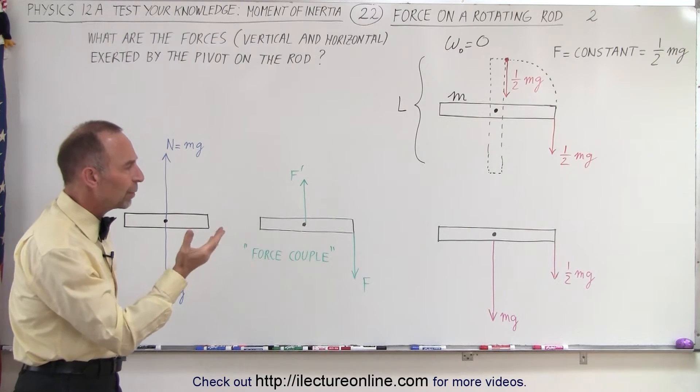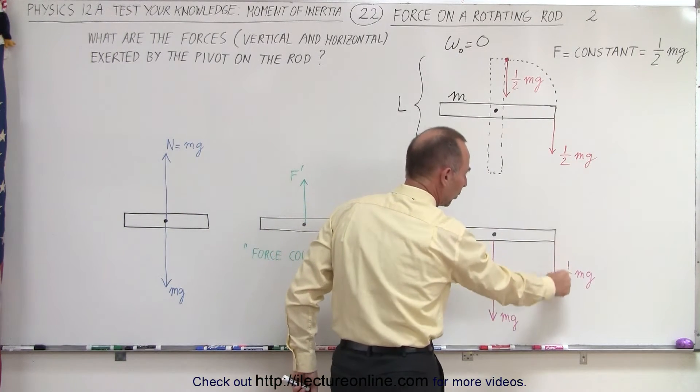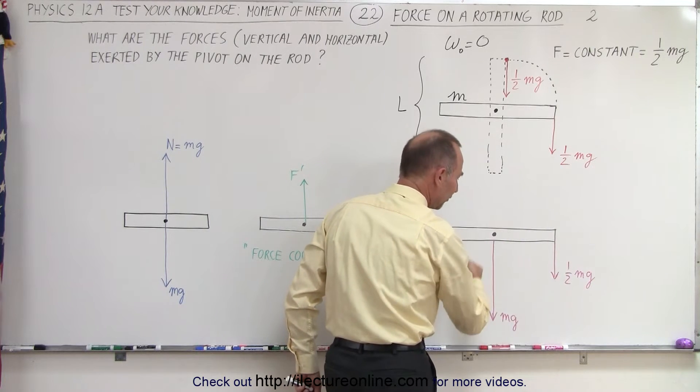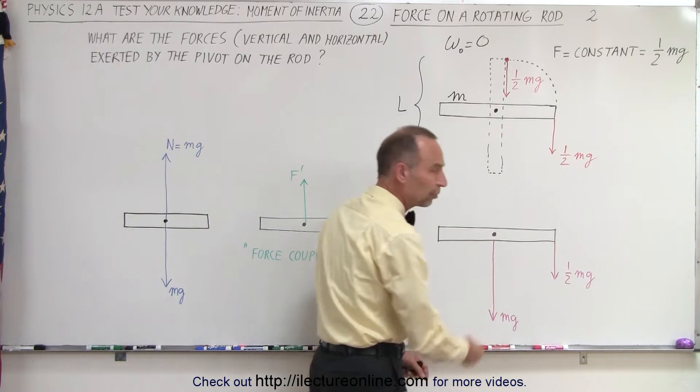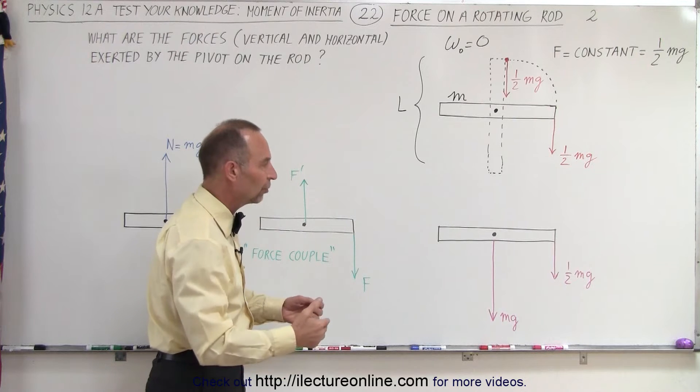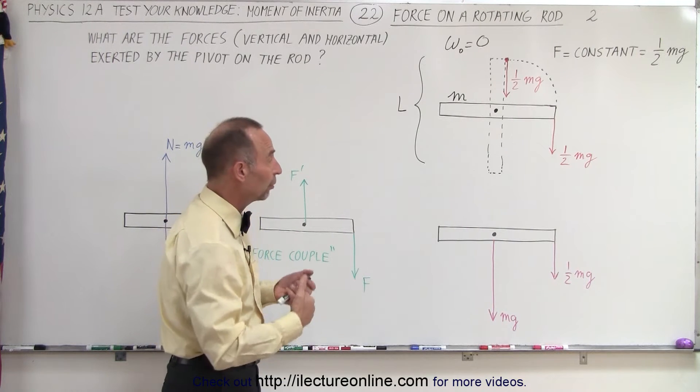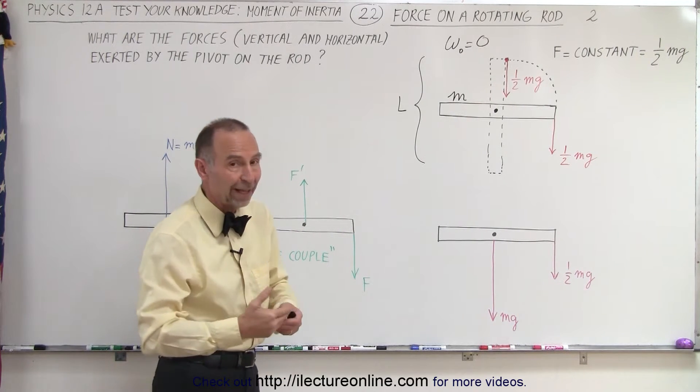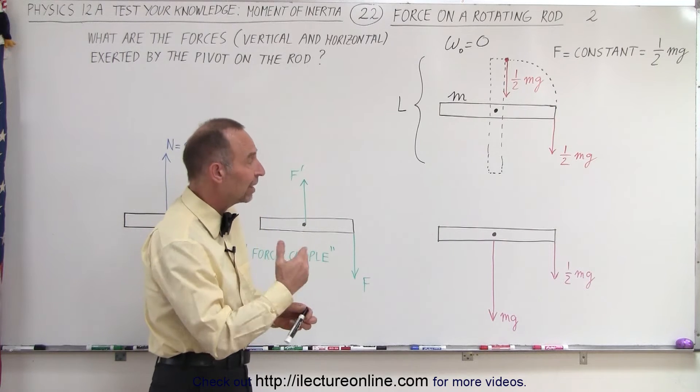Now, the forces that we can see are twofold. We have the force pulling on the end of the rod, plus we have the weight of the rod that acts through the center of mass. And so there needs to be an opposing force because we know that the sum of the forces must add up to zero, both in the x and in the y direction.